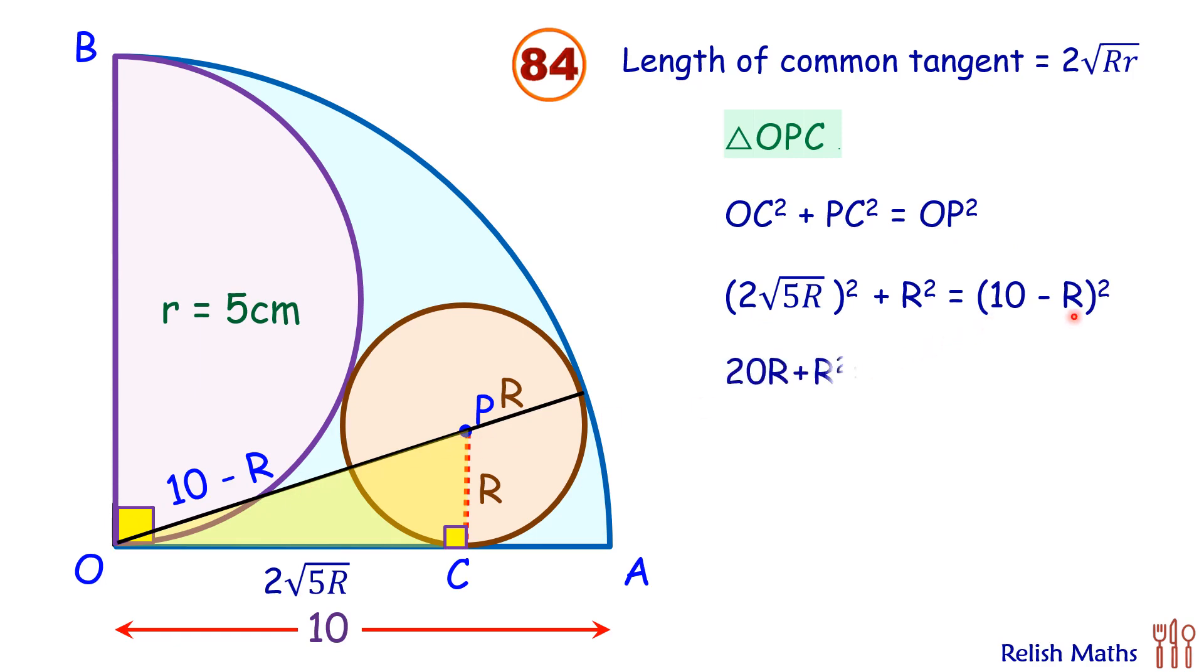Opening up the brackets, we will get 20R plus R squared equals 100 plus R squared minus 20R. Both sides R squared will get cancelled, and we will get 40R equals 100, and R, the radius of the circle, is 2.5 centimeters.